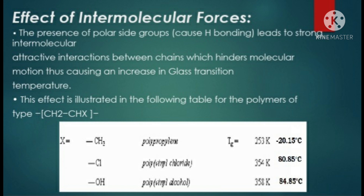Looking at the diagram, if X in the structure is CH2 as in polypropylene, the glass transition temperature will be 253 Kelvin, which is low. If we attach an electronegative atom such as chlorine — polyvinyl chloride — the temperature is higher. And in the case of an OH group — polyvinyl alcohol — the temperature increases further, because these electronegative atoms cause hydrogen bonding.